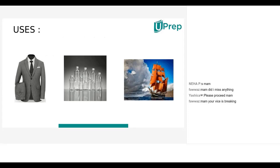Polyester is also used for PET bottles — plastic bottles. It is also used for the sails of boats and ships because it is hard and tear-proof, similar to nylon. Even in heavy winds it holds up well. These are among the important uses of polyester.